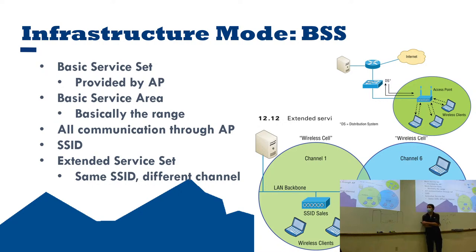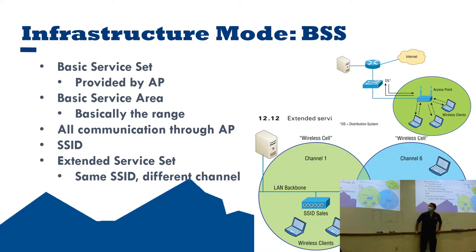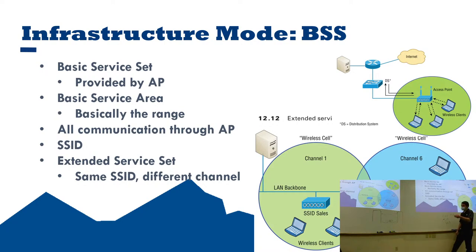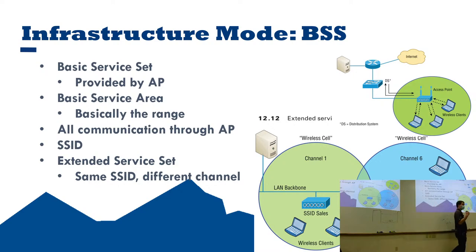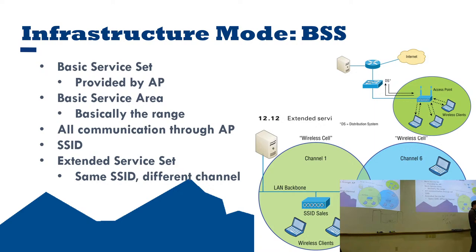We also have the extended service set (ESS), which mostly happens automatically in modern devices. If you have two different access points with the same SSID on the same network but on different channels, with at least 10% coverage area overlap, it allows seamless handoff between them. This was introduced around 802.11g. It's very beneficial — when walking down a corporate hallway, you don't want to be disconnecting and reconnecting from access point to access point all the time.